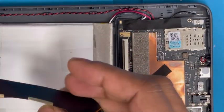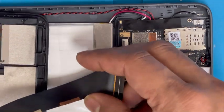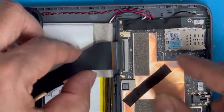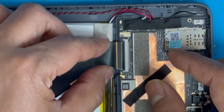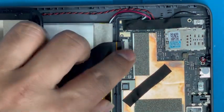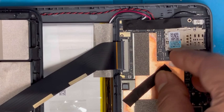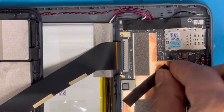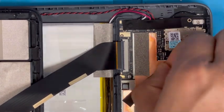Now we're gonna install the LCD connection on the motherboard. Put this tape on top of that so it's not going to move.